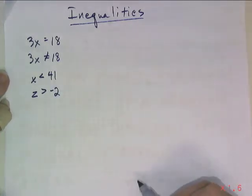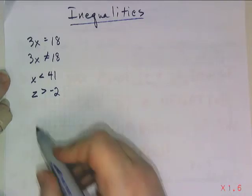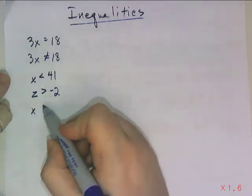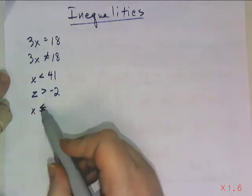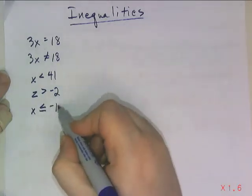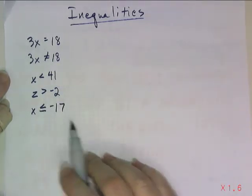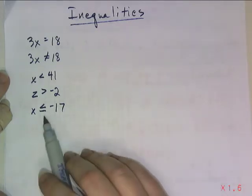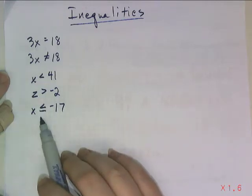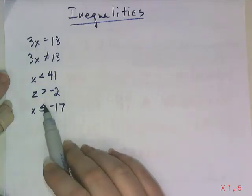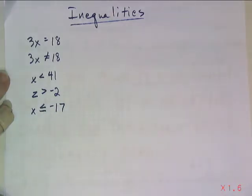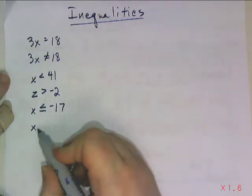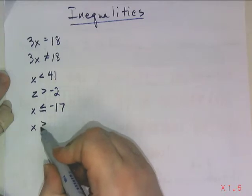There are a couple of other inequality symbols that you may be less familiar with. One is the less than sign with a line underneath, meaning less than or equal to. So x is less than or equal to negative 17. These are still considered inequalities because they are most likely less than, but they could be equal to that number. And then x is greater than or equal to 4.